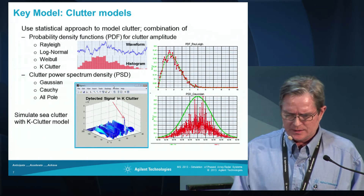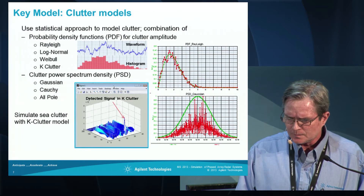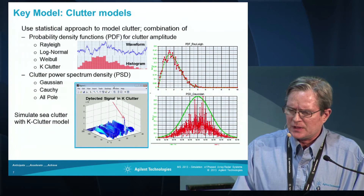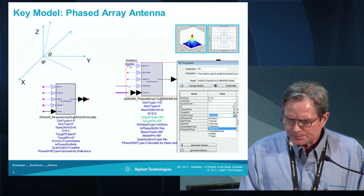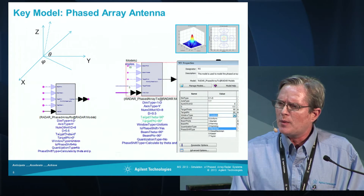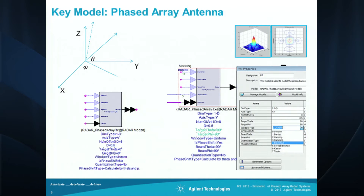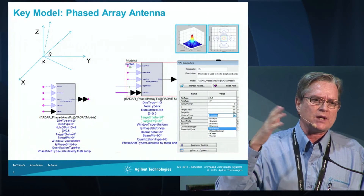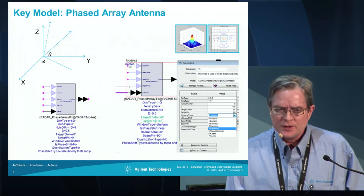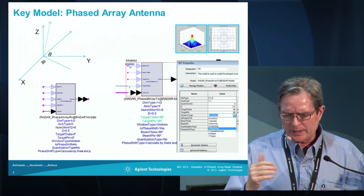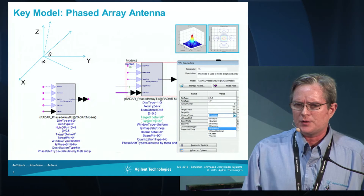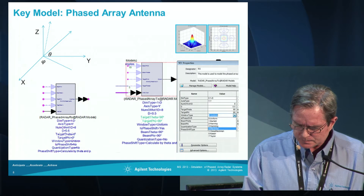There are also clutter models that we can look at with different characteristics of clutter, and users can define what those characteristics are. Two other really important models — which seem simple but are very complicated and useful — are for the whole phased array. In these models you can specify what type of array you have, the dimensions of the array, and even specify the target angle, and be able to use these models to simulate the direction of the radar.